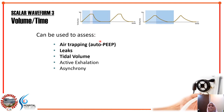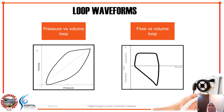To summarize: the volume waveform can be used to look for auto-PEEP or leaks, and obviously you can read the tidal volume directly from the graph. Now let's move on to the loop waveforms — pressure versus volume loop and flow against volume loop.